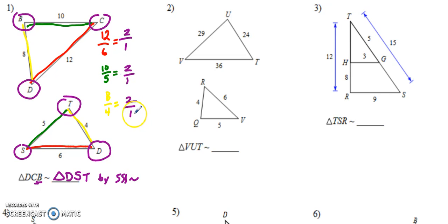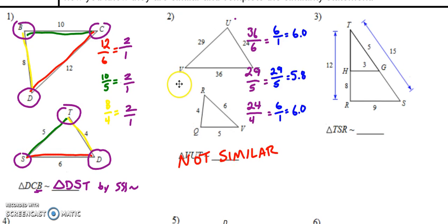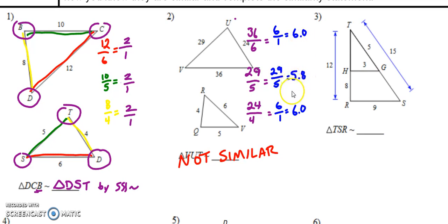Pause the video now and try questions two and three. Are they similar? Check the ratios, and if they are, write down the similarity statement. If not, just write 'not similar.' For two, those triangles are not similar. The ratios I found: 36 to 6 is a 6 to 1 ratio; 24 to 4 is a 6 to 1 ratio. But the middle side, 29 to 5, doesn't work out — I can't even simplify that fraction. It's close to being similar, but it's not exactly proportional. So if one side is not proportional to the others, they're not similar.